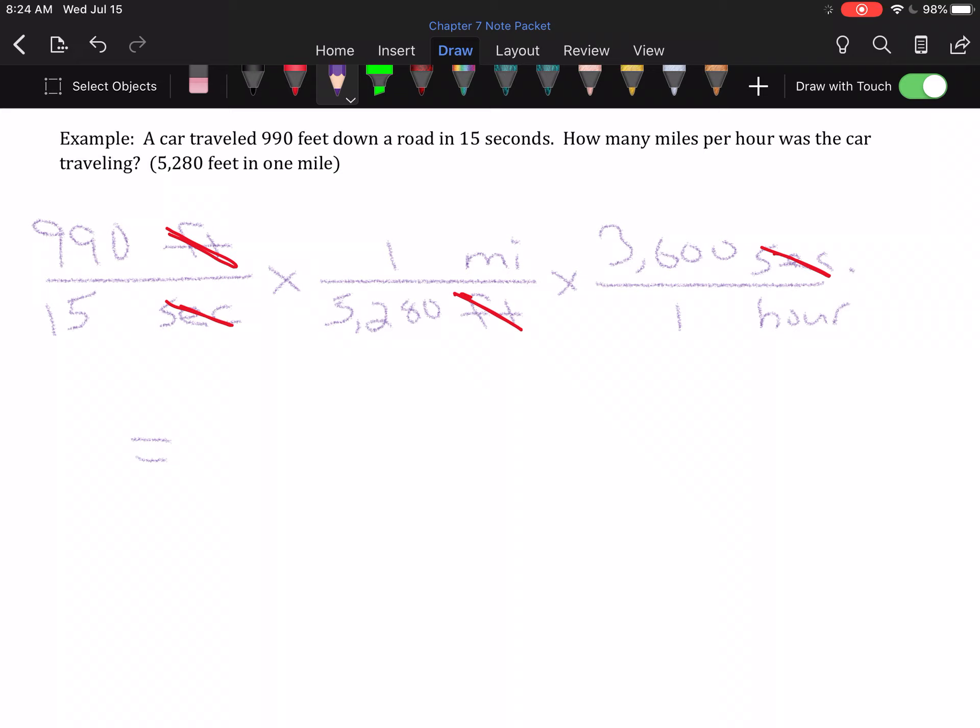So in the numerator, we're going to have 990 times 3,600. The one's going to be irrelevant. So that is 3,564,000 miles in the denominator, 15 times 5,280 times one. That is 79,200 hours. I'm not asked how many miles the car travels in 79,200 hours. I'm asked how many miles per hour. That means I need to take this one step further. I have to actually divide these. I have to turn this into a unit rate. So I will take 3,564,000 and divide by 79,200. And I get a perfect 45 miles per hour.